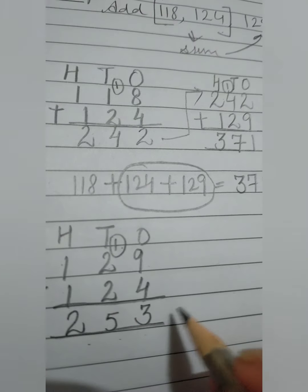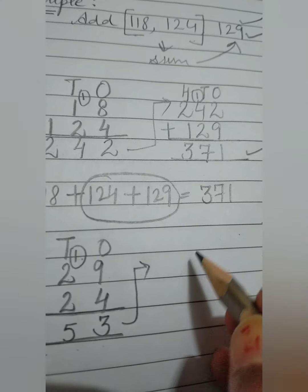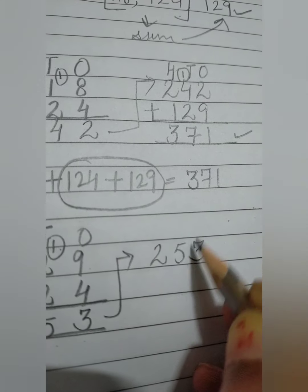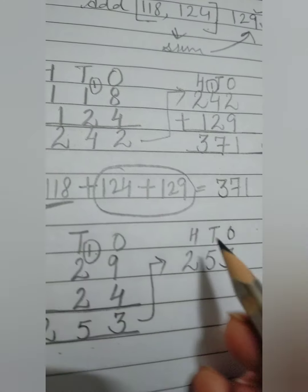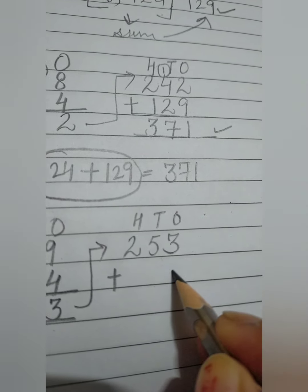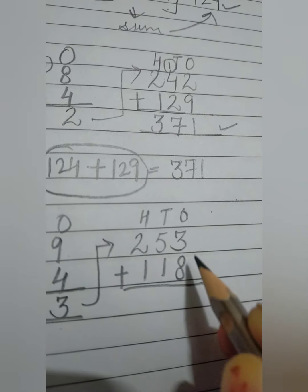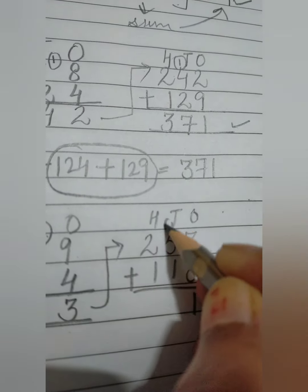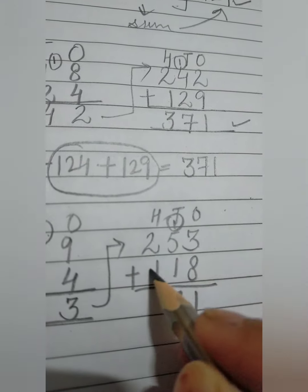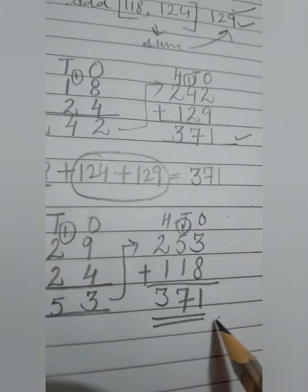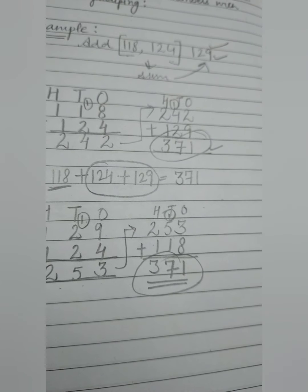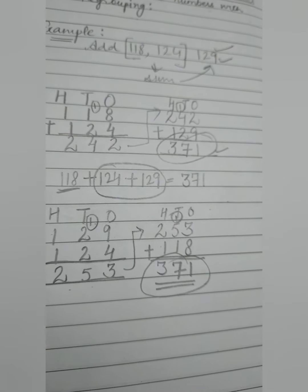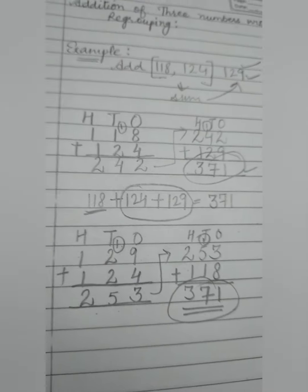9 plus 4 is 13, carry 1. 2 plus 1 is 3, and 2 plus 1 is 3 — we got 253. Now we add one more number, 118: 3 plus 8 is 11, carry 1. 5 plus 1 is 6, then 2 plus 1 is 3. We get 371 again. You can observe that changing the order of the numbers doesn't affect the sum.